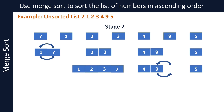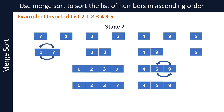Let's merge the sublist containing four and nine with the sublist containing just the number five. Since five should be between four and nine in sort order, the algorithm swaps the position of five and nine before merging, forming a new sorted sublist comprising four, five, and nine. We now have just two sublists left: the first with numbers one, two, three, and seven, and the second with numbers four, five, and nine.